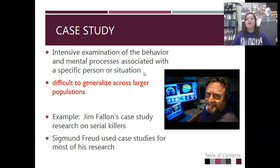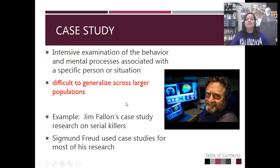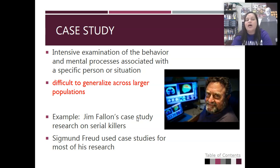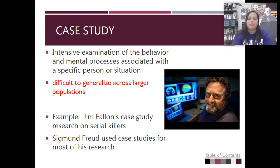Our next type is a case study, where we gather a large amount of information about a specific subject — an intense examination of behavior and mental processes. It's difficult, though, to generalize that information across larger populations. We have the example with Jim Fallon, who studied serial killers — gathering educational records, prison records, foster records, and any kind of information about them — and was able to draw conclusions about patterns in their behavior, that they had common childhood histories, which was probably a contributing factor to their criminal behaviors and the way their brain processed relationships. But that information can't be generalized to the whole population.